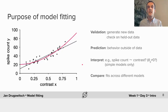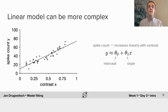Let's now look at one particular type of model that will be the main focus of today. These models, which are known as linear models, are probably the single most useful class of models you will see in this course. We've already looked at a very simple instance — the line describing the relationship between contrast and spike counts — but they can be significantly more complex.